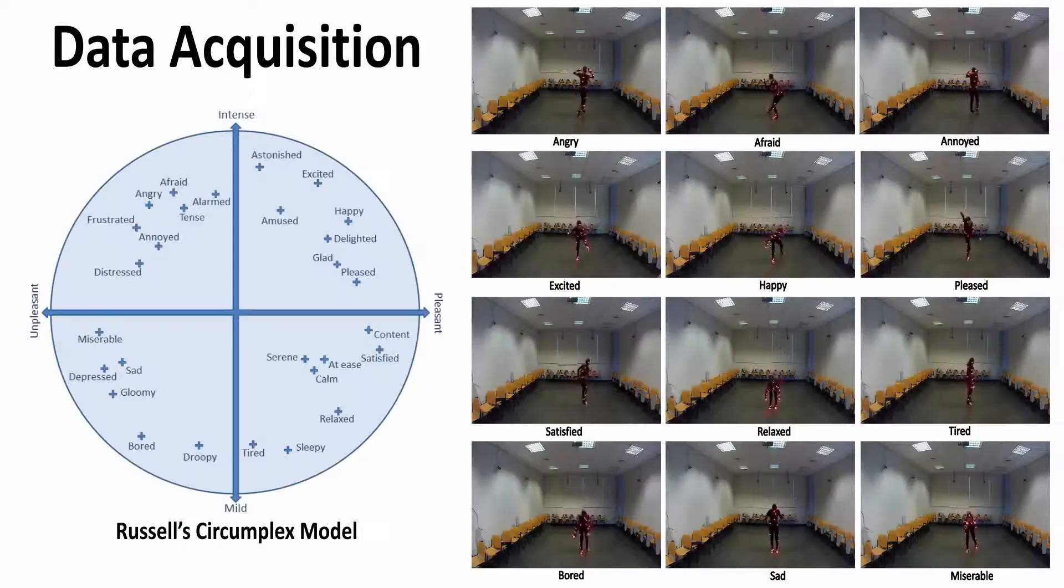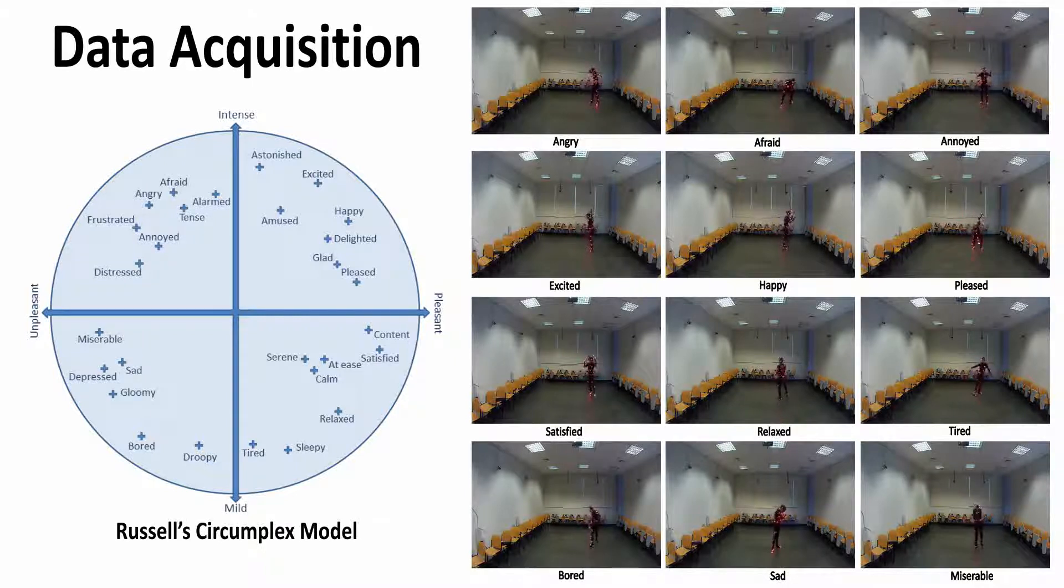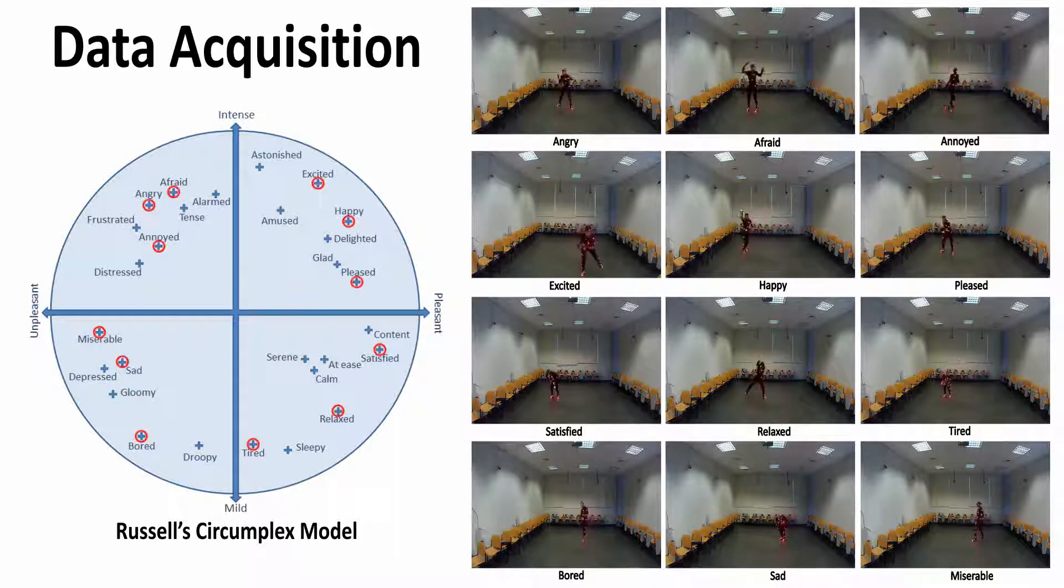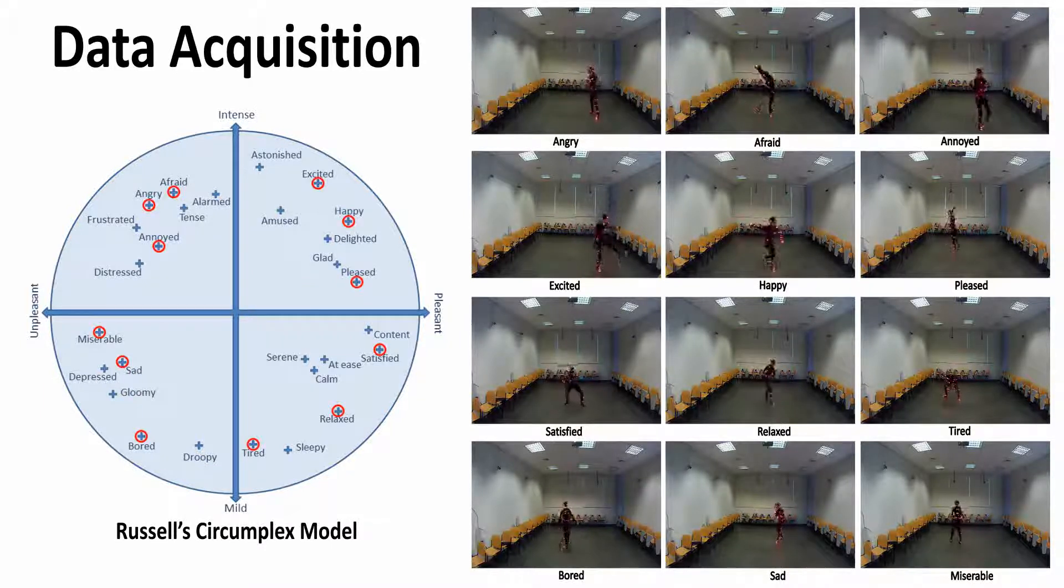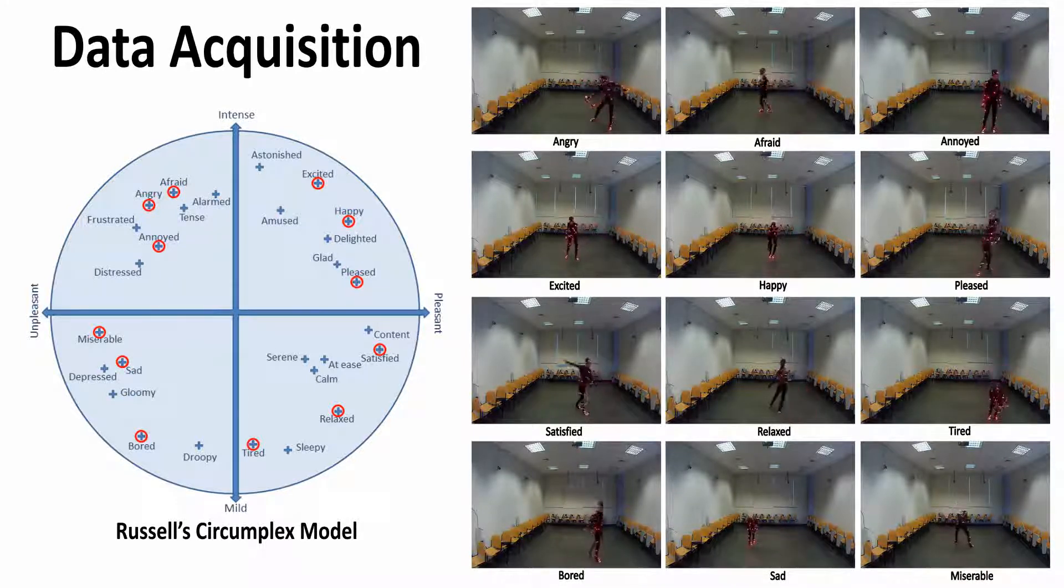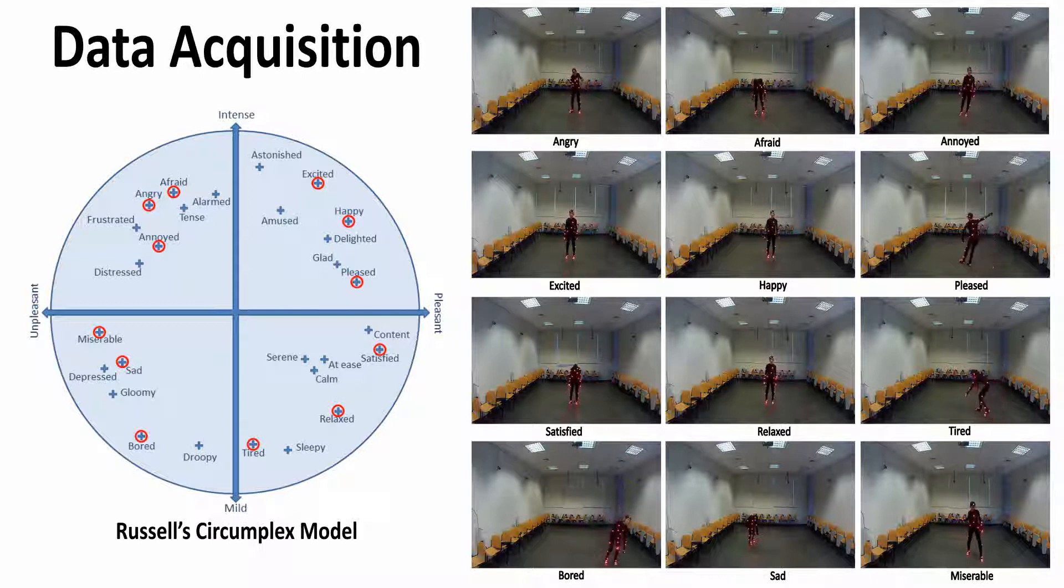We have captured a total of 108 contemporary dance performances from 9 different dancers and labeled each with the emotion acted by the performer. Twelve emotions were strategically selected that are broadly distributed across the arousal and valence axes of the widely used Russell-circumplex model of emotion.